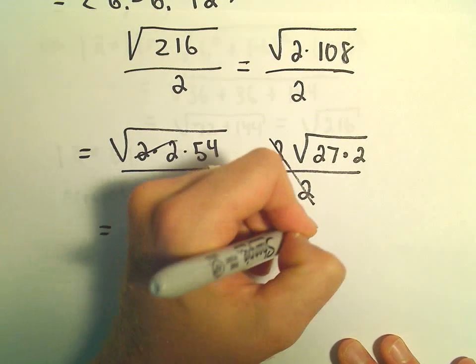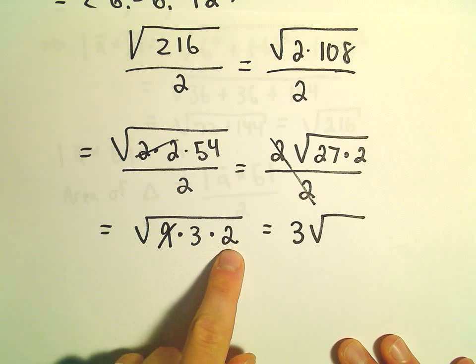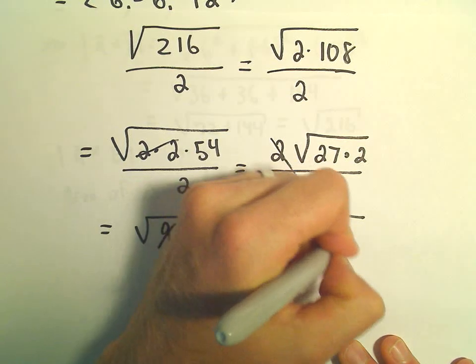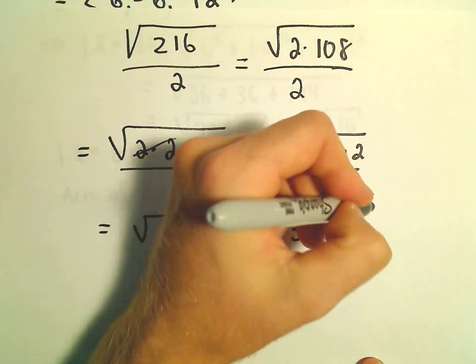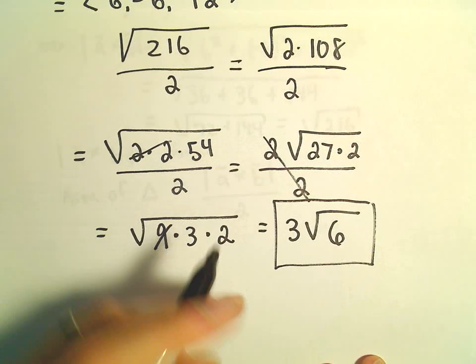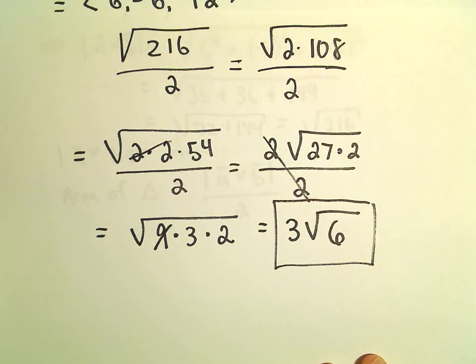So the 9 will come out as a 3. We're left with 3 times 2, which I'm just going to multiply back together. So to me, it looks like the area of our triangle would equal 3 times the square root of 6.